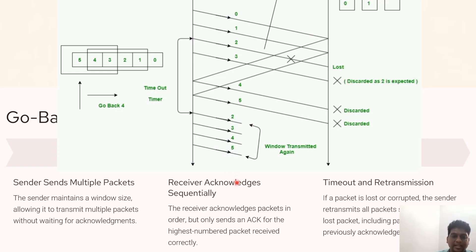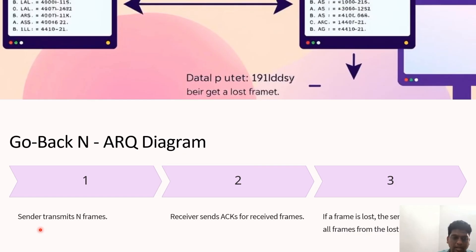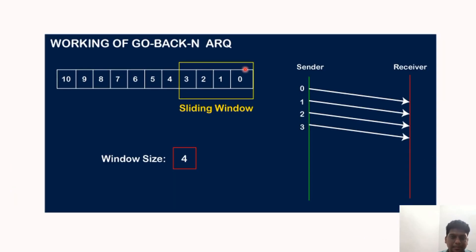In the first step the sender sends multiple packets, then receives acknowledgements sequentially. After a timeout, or if data sent by the sender is lost or corrupted, the sender retransmits the packet including the last lost packet. In the flow diagram: step one, send frames; step two, receive acknowledgements for received frames. If a frame is lost, the sender has to resend all frames from the window. Consider this example with a total data size of 10 and window size of 4, covering frames 0, 1, 2, 3.